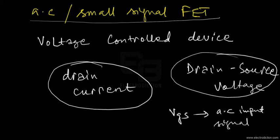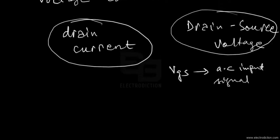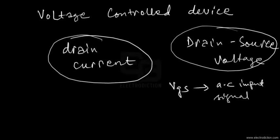In all FETs this is the model we'll be referring to and discussing in this tutorial. There are basically two types of FET models: one is the model based on current control, and the other is based on voltage control. We'll start with the current control model of the FET first.